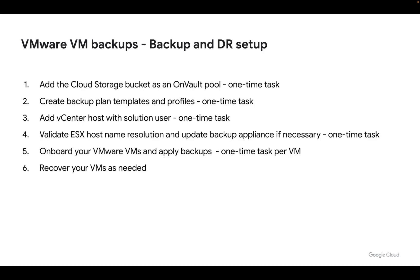Once we've done that setup, we then turn to our Google Cloud Backup and DR console, where we add the cloud storage bucket as an OnVault pool, create our backup plan templates and profiles, add our vCenter host with the solution user, validate that the ESXi host names can be resolved by the backup and recovery appliance, and then onboard our VMware VMs and apply backup plans to them. Once we've got our backups, we can then use them to do mounts, clones, or restores as needed, and we'll show you how to do all of these things in upcoming videos.